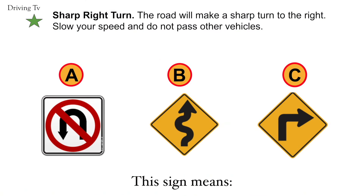Sharp right turn. The road will make a sharp turn to the right. Slow your speed and do not pass other vehicles. Correct answer is C. Sharp right turn.